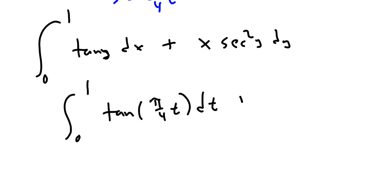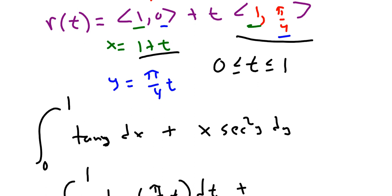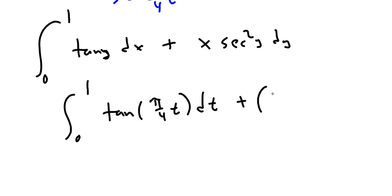And then you're going to have plus over here x, and x is just if we're careful x is 1 plus t, and then you're going to have secant squared of whatever y was which was π/4 times t, and then dt.